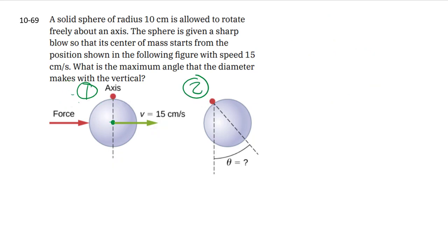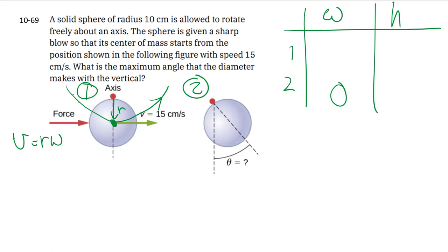Let's collect our data in a table like we always do with energy problems. We have time one, time two. We're dealing with rotational kinetic energy, so we need the omega at both times, and we need the height at both times. For angular velocity, time two, you're at full stop. Time one, around this axis, they tell us that the center of mass is traveling with a certain speed. Around this axis, the center of mass travels in a circle with that r. So since v equals r omega, we can flip it around and say omega equals v over r.